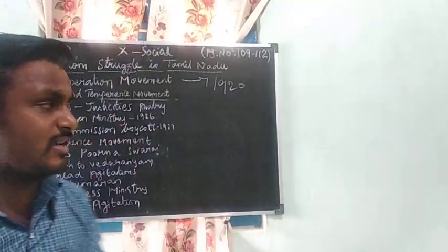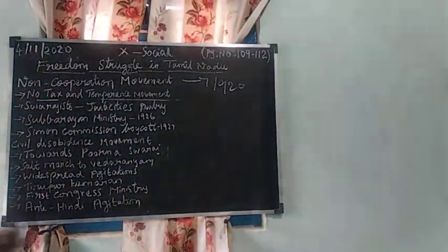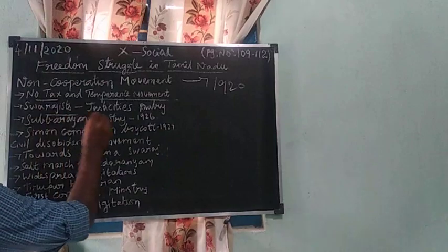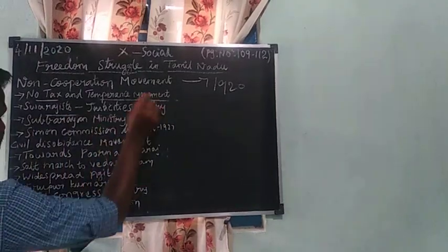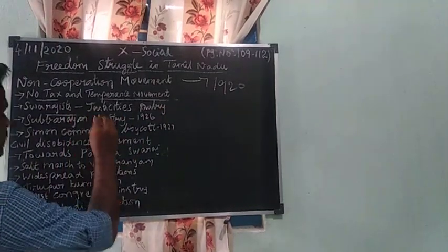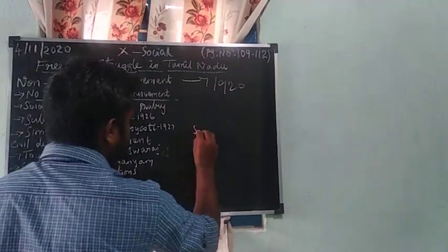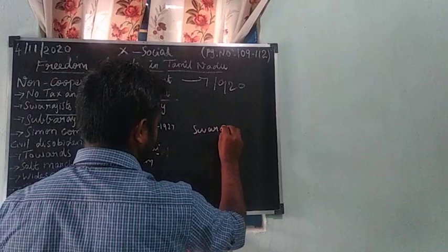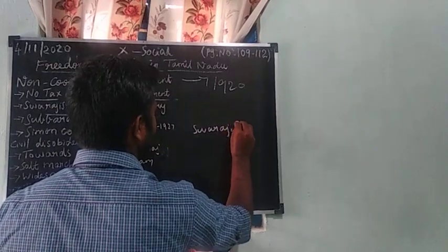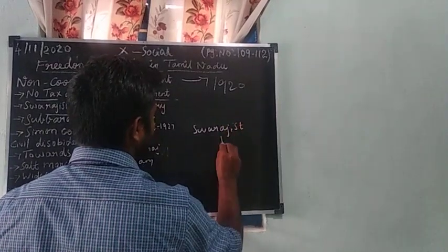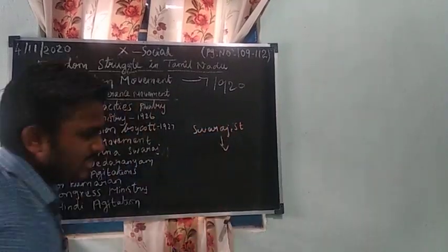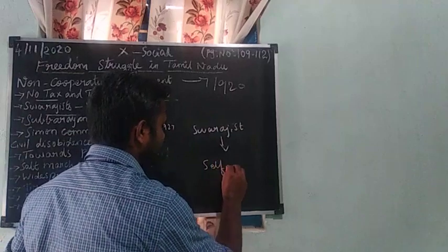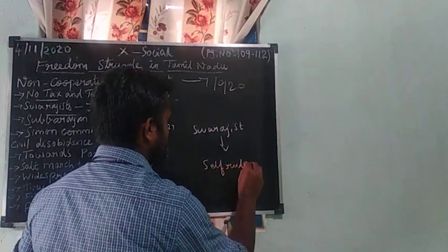The temperance movement — temperance means alcohol. Indian people were against alcohol, so they started a movement against it, called the temperance movement. Next is the Swarajist and Justice Party. Swarajist is a political party — Swarajist means self-rule.